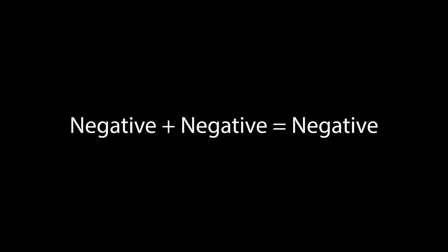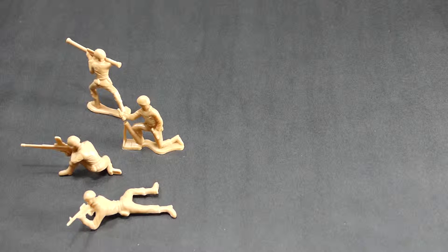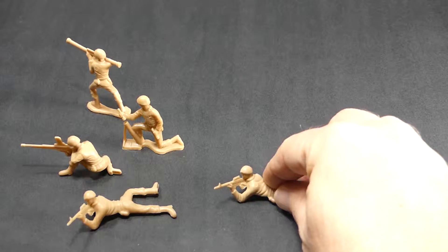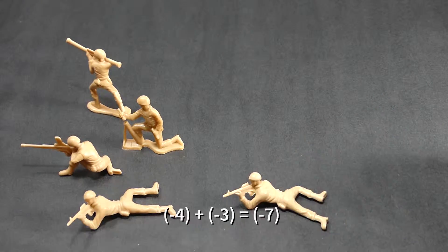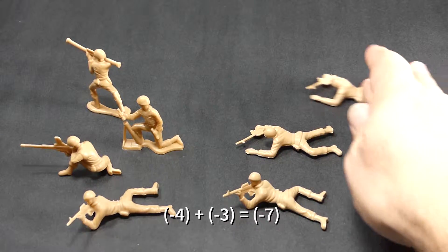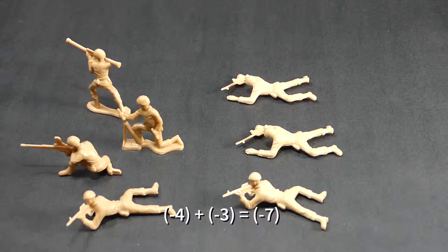Our next situation is like the first. This is a negative plus a negative, and it's going to equal a negative. So for example, we have a negative four, and we're going to add three negatives to this. What we have now is a total of negative seven army soldiers.